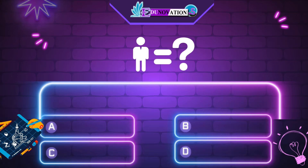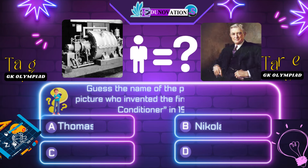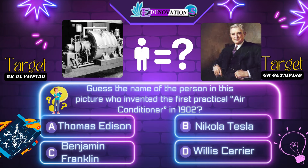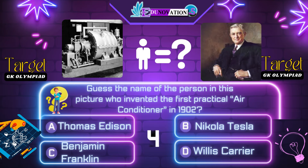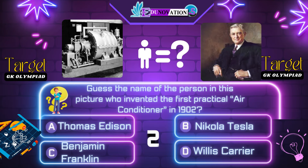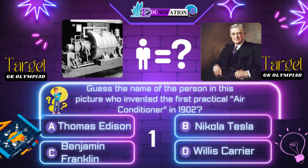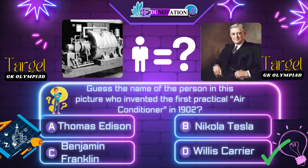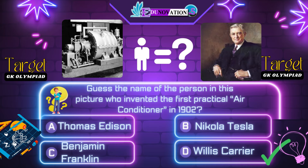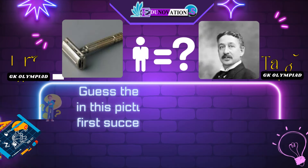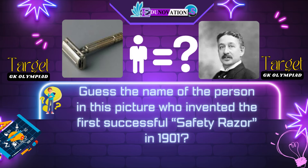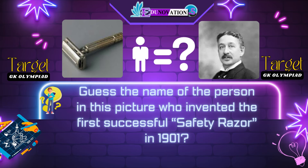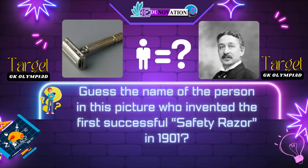Now next question. Guess the name of the person in this picture who invented the first practical air conditioner in 1902. Your options are: A. Thomas Edison, B. Nikola Tesla, C. Benjamin Franklin, D. Willis Carrier. Time's up. Correct answer is D. Willis Carrier.